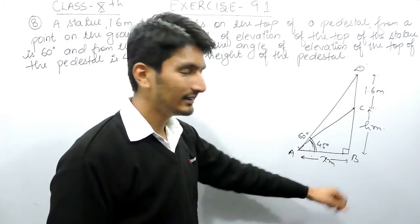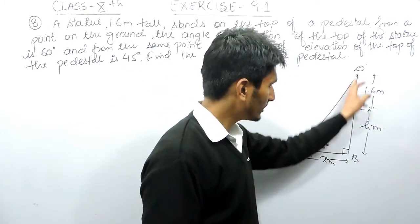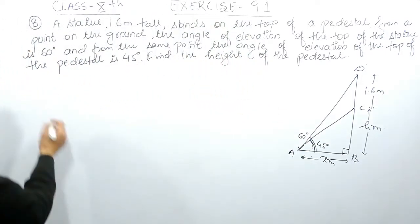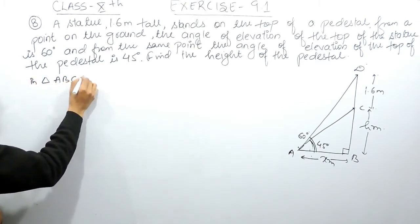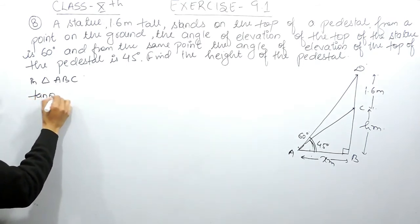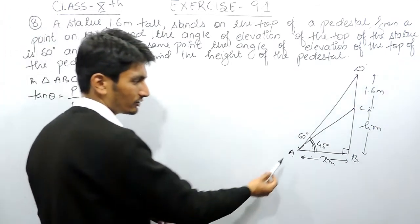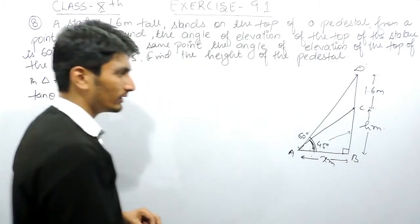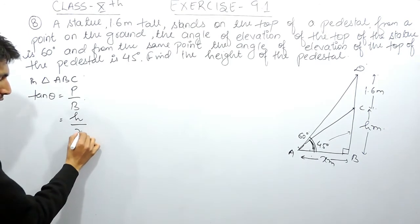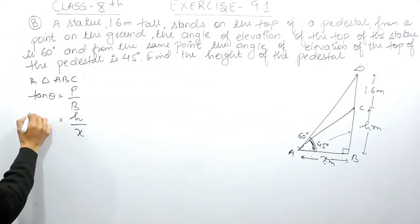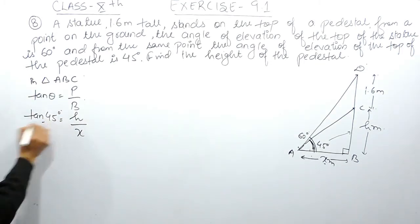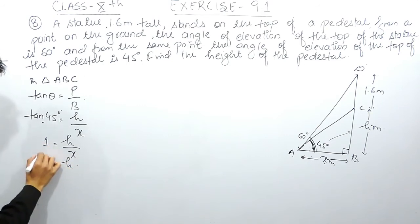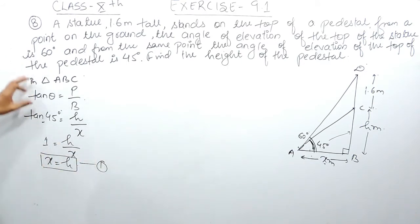First, you must know how to form the figure. There are two triangles, and in both triangles you have to use the ratio for tan θ, then substitute the value from one equation into the second. In the smaller triangle ABC, tan θ equals perpendicular upon base. Here θ is 45 degrees, so the perpendicular is h meters and the base is x meters. Since tan 45° = 1, we get h/x = 1, meaning h equals x. This is our first equation.